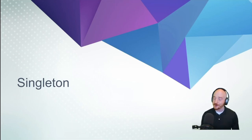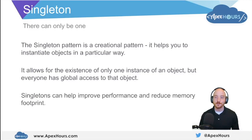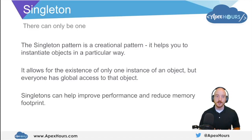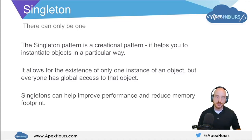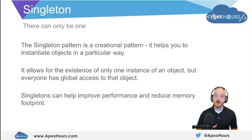Our first pattern is called Singleton. The singleton pattern is the very easiest one for us to understand, and it's actually a very helpful and useful pattern. Singleton, as you can kind of tell by the name, means that there can only be one. It's a creational pattern that helps you instantiate objects in a particular way, but when you use the singleton pattern it programmatically enforces that there can only ever be one instance of an object within your program's runtime, while everybody shares global access to that object. We use the singleton pattern to help improve our application's performance and reduce our memory footprint.